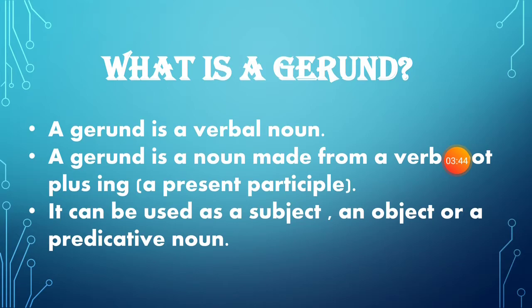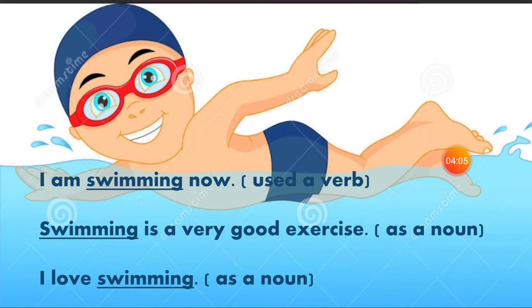So what did we learn? A gerund acts like a noun in spite of being a verb. It is made from a verb root plus 'ing' and it can be used as a subject, an object, or a predicative noun. Now let's observe these three following sentences to get a clear understanding. First: 'I am swimming now.' Second: 'Swimming is a very good exercise.' Third: 'I love swimming.'